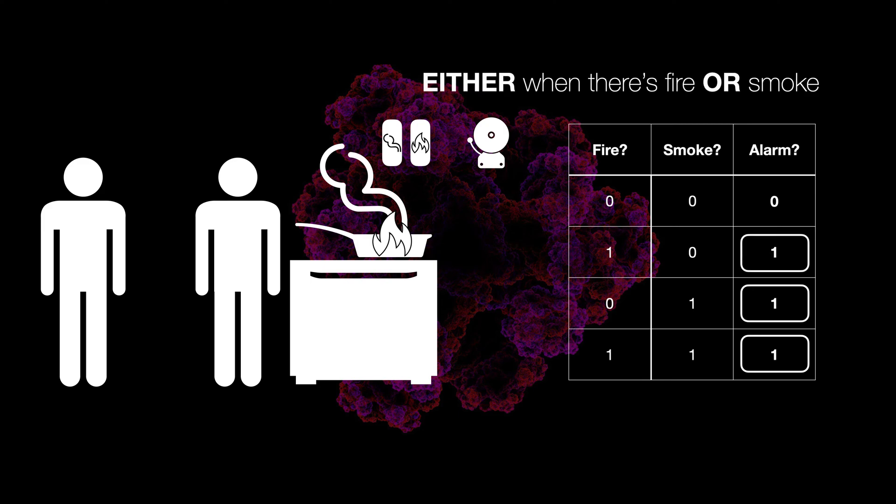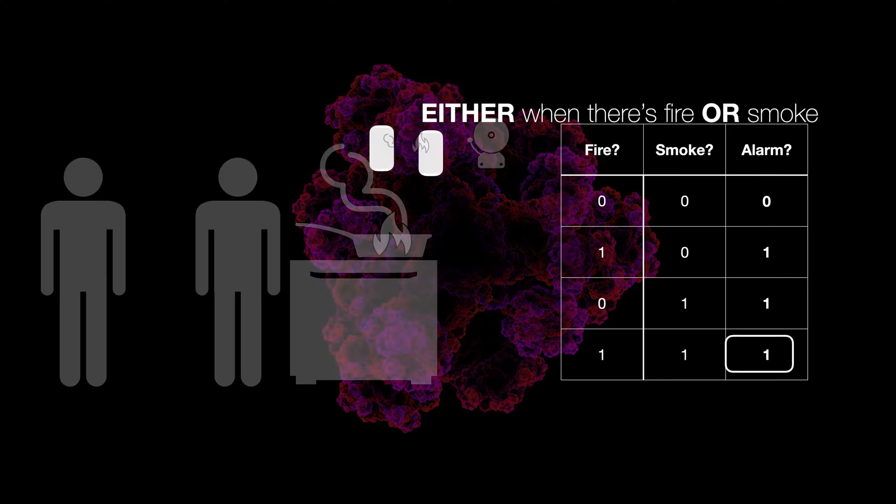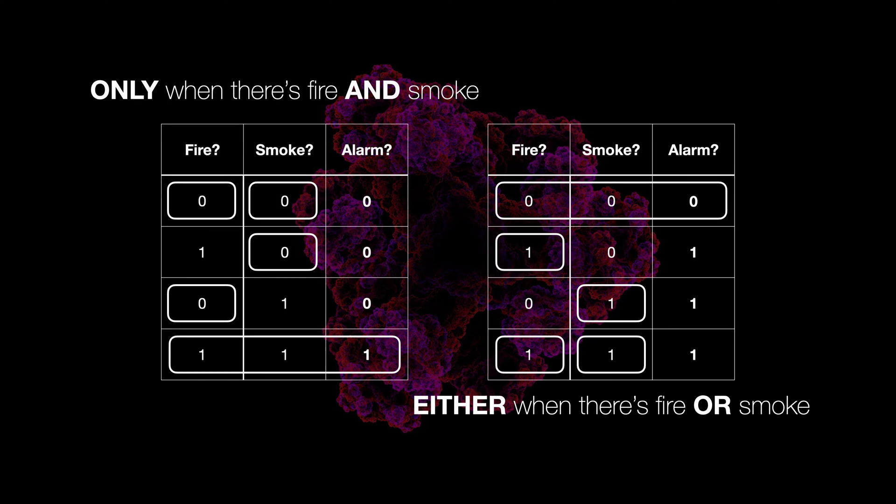He even said that we should go ahead and go complain to the dorm administration that the alarm should actually turn on either when there's fire or when there's smoke. So now, we've got two different kinds of decisions being made here. One, where both the input one and two are required, or when either one or two are required.